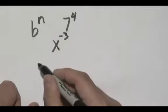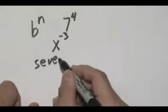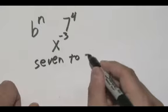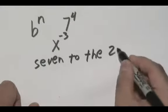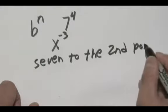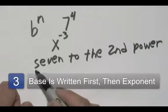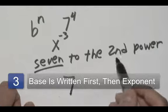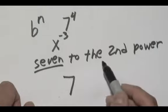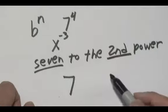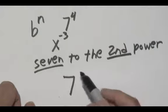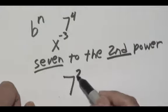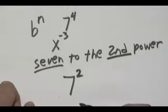So if you have something like 7 to the 2nd power, this here is going to be your base. What's mentioned before the word power is going to be your exponent, so 2nd power means the 2 is going to go here as your exponent.